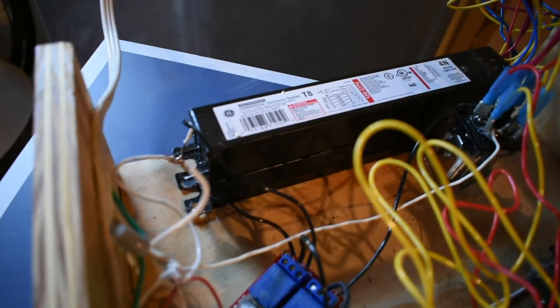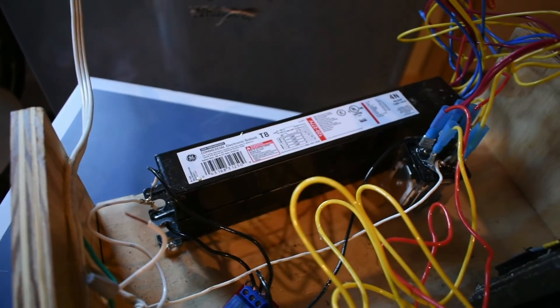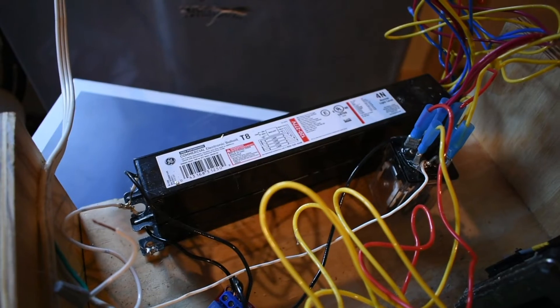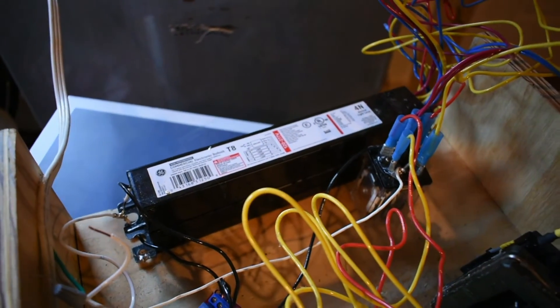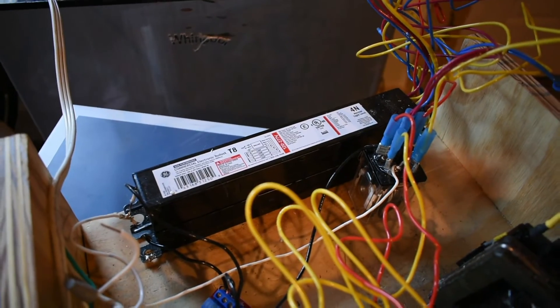So over here we have two fluorescent light ballasts which drive the flyback transformer. One is a two-light ballast and the other is a four-light ballast, which is where I get the two power levels from. I didn't expect them to behave like this, but they did.